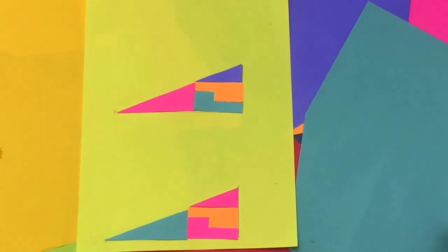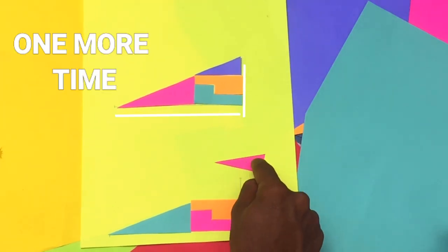There we go, it's exactly the same height and same width. Where is the missing square gone?